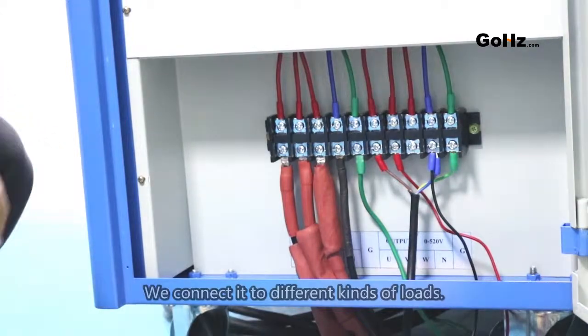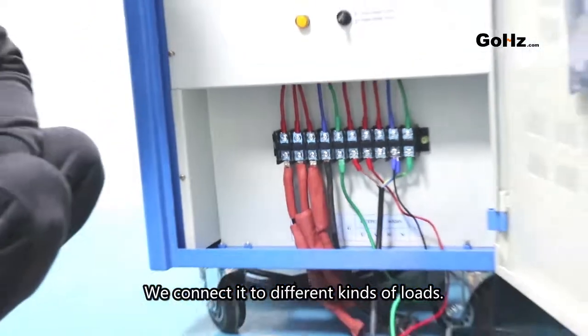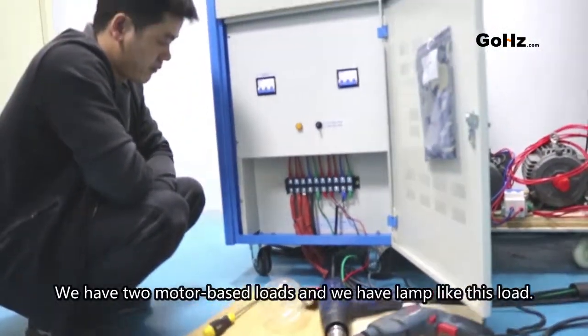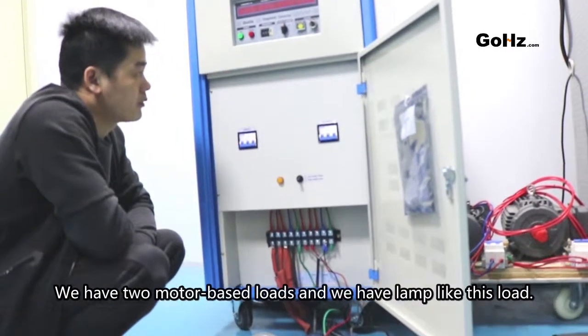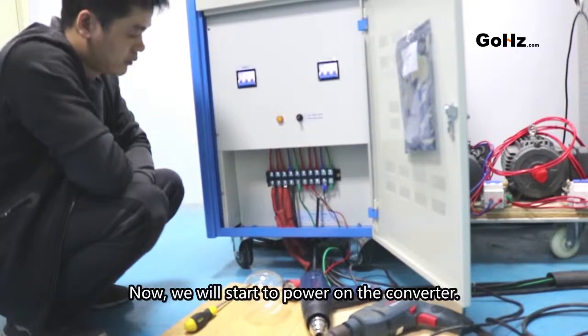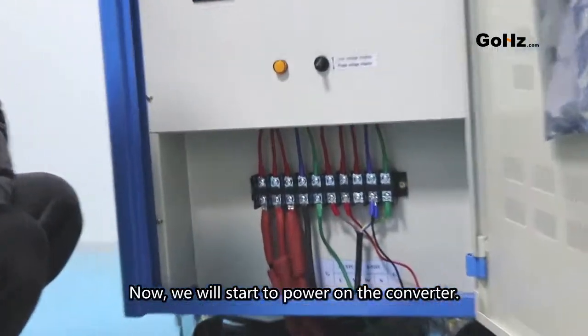Now it's okay. We connected different kinds of loads. We have two motor-based loads and we have a lamp-like resistive load. Now we will start powering on the converter.